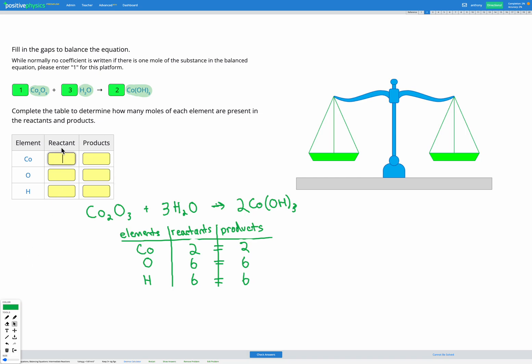Finally, we'll just add our total numbers of each element of the reactants and products here just to check our answers are correct. We had two cobalts before and two cobalts after. We had six oxygens before and six oxygens after. And we had six hydrogens before and six hydrogens after.